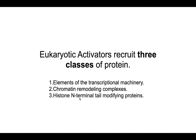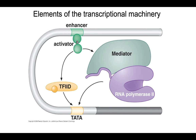Let's start with elements of the transcriptional machinery. Here is the DNA sequence, our enhancer. Here is the activator binding to that with its DNA binding domain. And with its activation domain, it recruits mediator — a large protein complex necessary for the binding of RNA polymerase to the promoter — and it can interact with some of the general transcription factors, for example TF2D. In that way, our activator is recruiting this transcriptional machinery without binding directly to RNA polymerase.